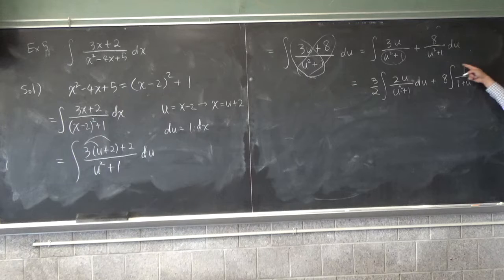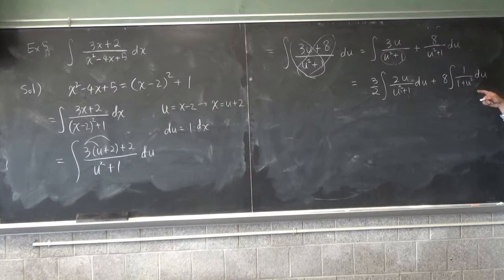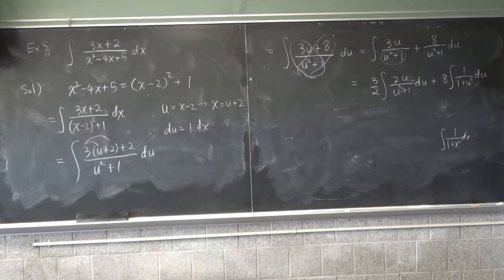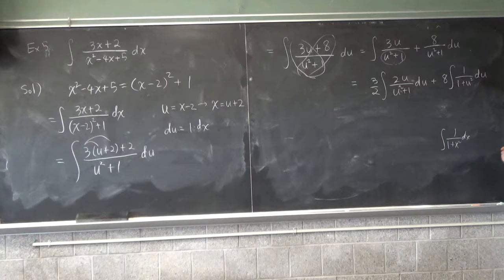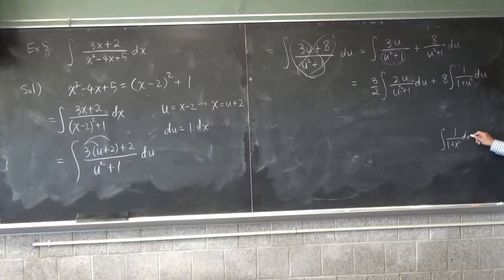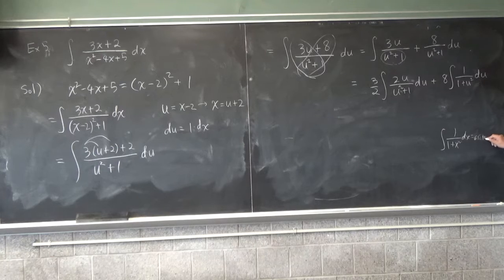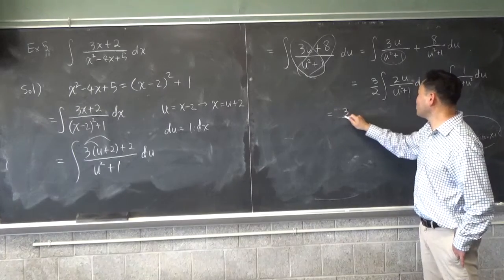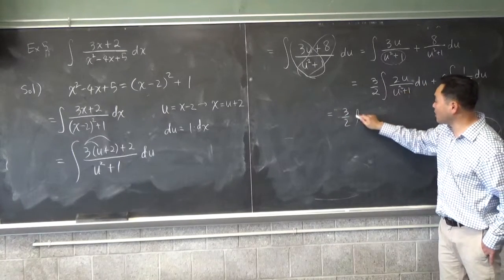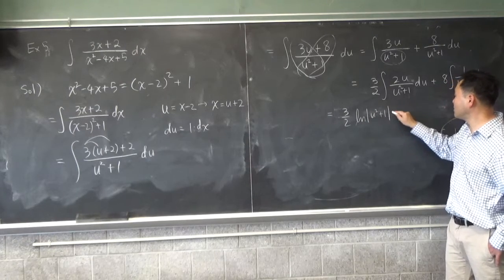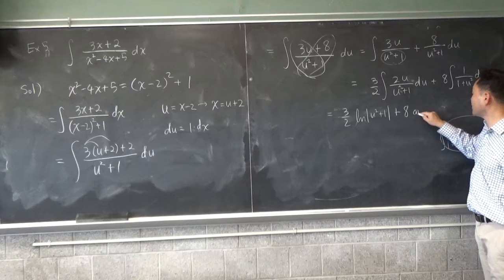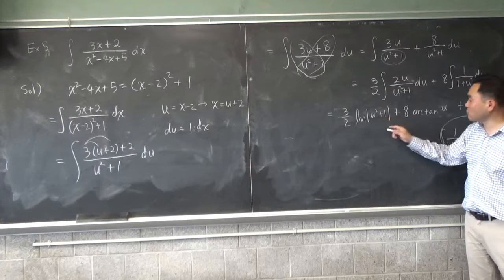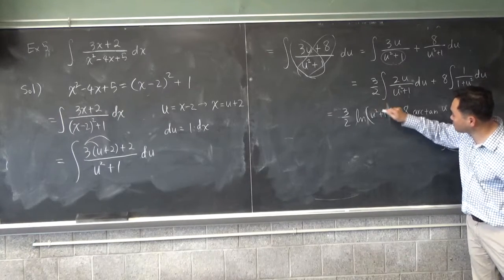What's the anti-derivative of this second part? What's the integral of 1 over 1 plus x squared dx? Arc tangent of x plus c. So that's what you're going to get. So you get 3 over 2, this one is f prime over f times the ln of the denominator plus 8 times arc tangent of u plus c. And by the way, u squared plus 1 is always positive, so you don't need an absolute value. You can just put this.